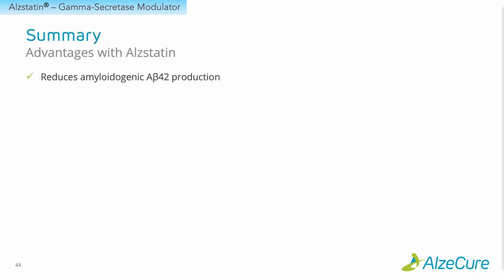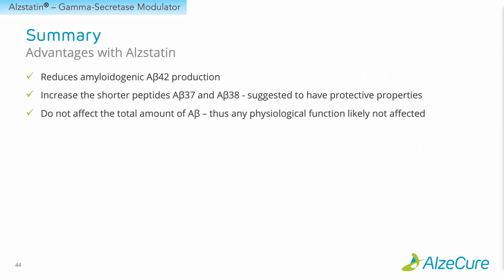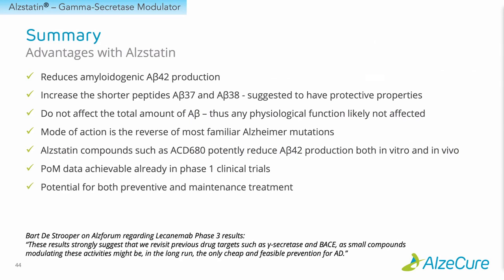To summarize the advantages with Alstatin: we can reduce toxic amyloidogenic A-beta 42 production in the brain, while also increasing the shorter protective peptides A-beta 37 and 38. The net result is we don't affect the total amount of A-beta, so if A-beta has a physiological role, that is preserved. The mode of action is actually the reverse of most familial Alzheimer's mutations. Compounds such as ACD 680 can potently reduce A-beta 42 production in vivo by more than 60%, proof of mechanism data can be achieved already in phase one clinical trials, and we see potential for both preventive and maintenance treatment.